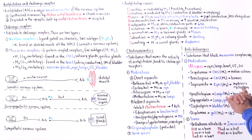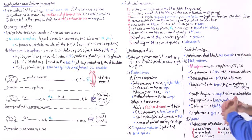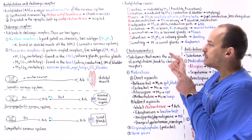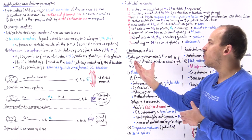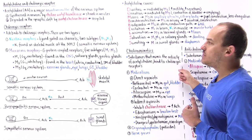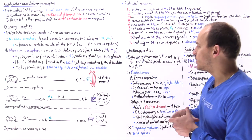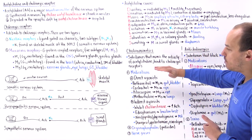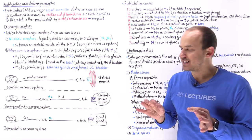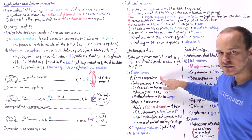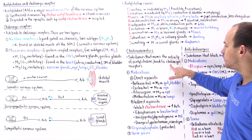This leads us to medications and drugs. I've broken these down into cholinomimetics and anticholinergics. Cholinomimetics are medications that mimic the activity of acetylcholine — they bind onto cholinergic receptors, including both muscarinic and nicotinic receptors. We have medications and toxins. Medications can be broken down into two types: direct agonists and indirect agonists of cholinergic receptors.